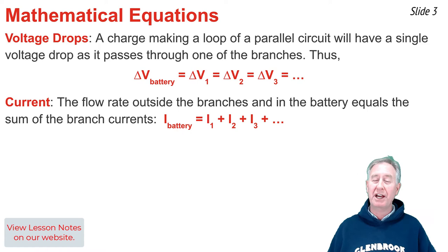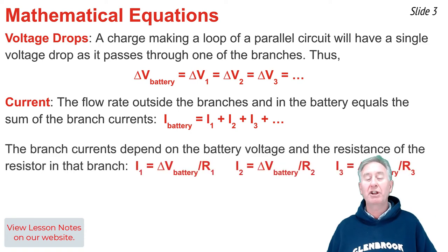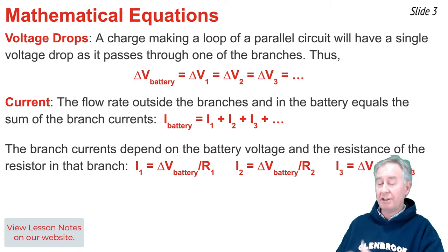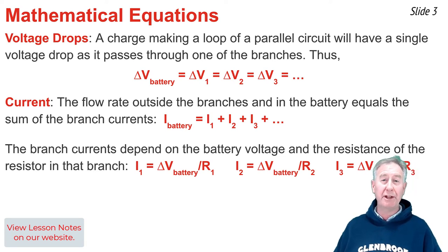Thus, we can say that the current within the battery, in the wires outside the branches, is equal to the sum of the currents inside the branches: I₁ plus I₂ plus I₃. If you need to find the current within any of the branches, you need to know the electric potential difference across that branch and the resistance of the resistor in that branch.